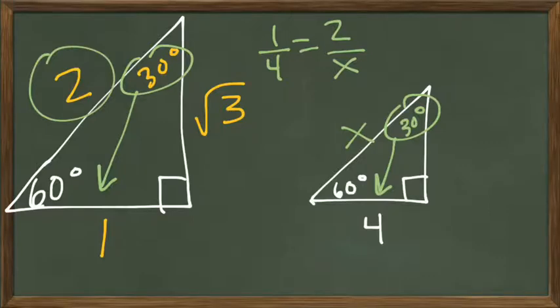So how do I get from 4 to x? I multiply by 2. And so 4 times 2 equals 8, so x equals 8. Fantastic.